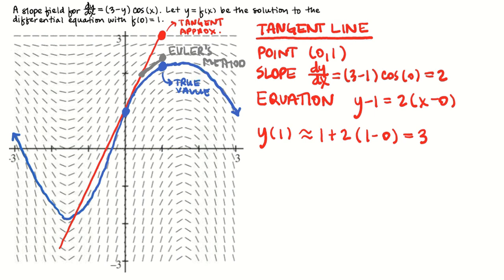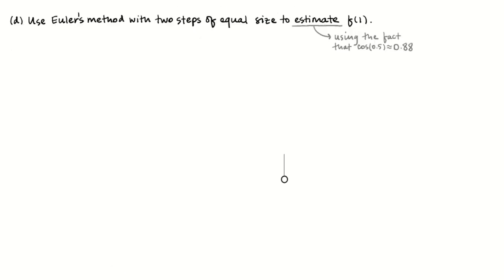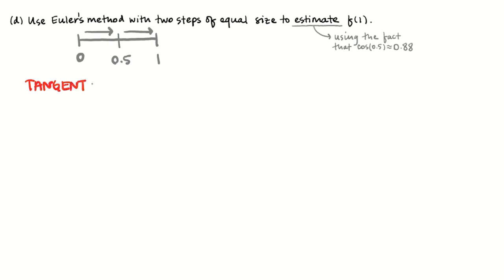So let's actually do Euler's method with this differential equation. We're probably going to need the fact that cosine of 0.5 is approximately 0.88. What we're going to do is write down repeated tangent lines. If we have information at x equals 0 and we're interested in approximating the value of the function at x equals 1, and we're taking two steps of equal size, the first step goes from 0 to 0.5, and the second step goes from 0.5 to 1. So I'm going to write down my equation for my first tangent line. If it's two steps of equal size, it's going to be two tangent lines.